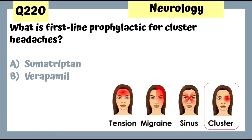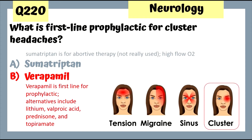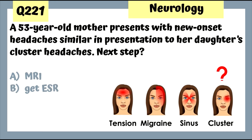Question 220: First-line prophylactic for cluster headaches is the calcium channel blocker verapamil. Alternatives include lithium, valproic acid, prednisone, and topiramate. Sumatriptan is for abortive therapy but is not really used first-line — first-line abortive is really high-flow oxygen for cluster headaches.